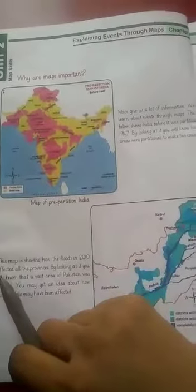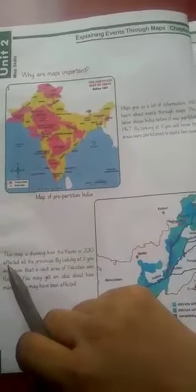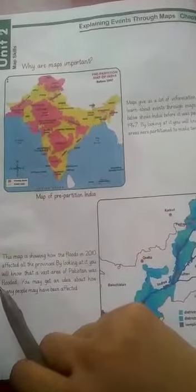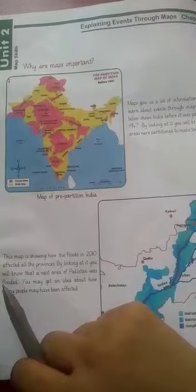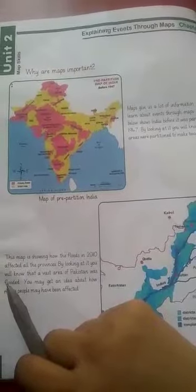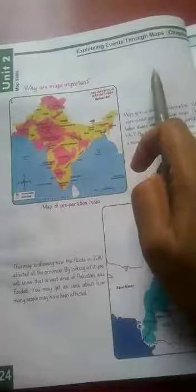Bismillah ar-Rahman ar-Rahim. Assalamu alaikum, dear students of grade 5. Hope you all are fine and in good health. Welcome to the recorded lesson. This is the last chapter, which is chapter number 4 of unit 2: Explaining events through maps.